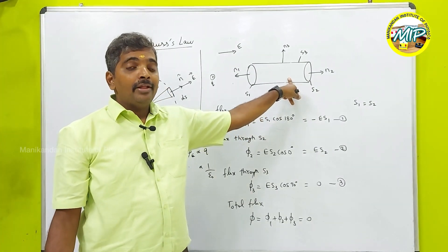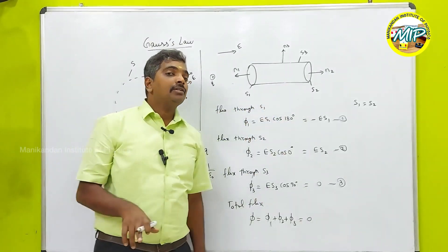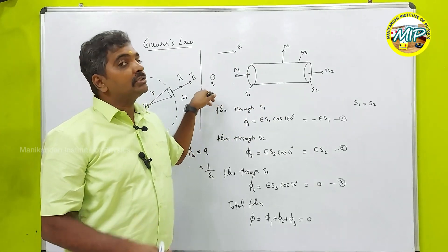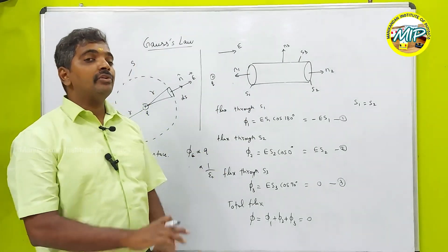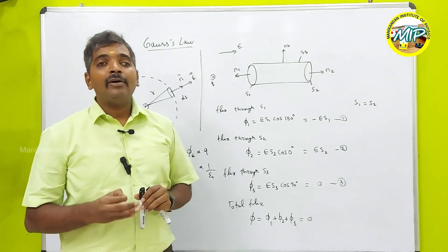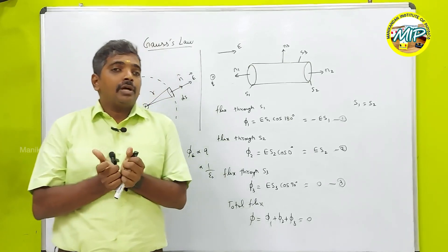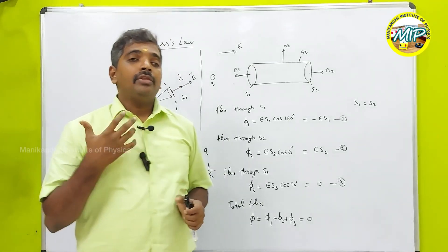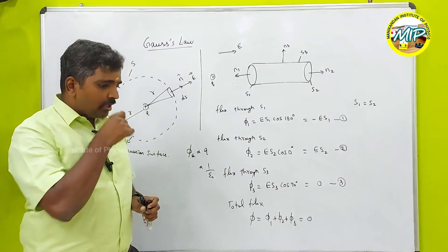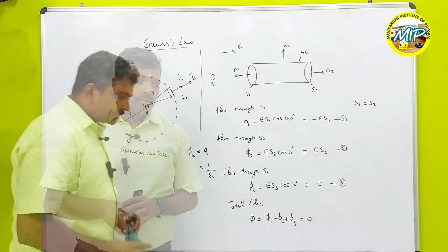Why is the total flux zero? Because there is no charge enclosed by the Gaussian surface — the charge is only outside the Gaussian surface. This confirms Gauss's law for electrostatics: when there is no charge enclosed by the Gaussian surface, the total flux through the Gaussian surface is zero.